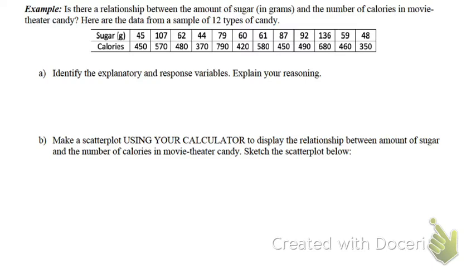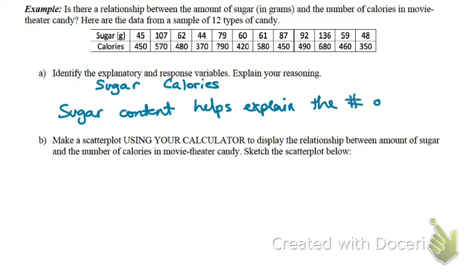Sugar grams, calories, which one is the explanatory? Which one is the response? Sugar grams. So you think the sugar grams is helping to explain the number of calories? Yeah. Absolutely. Do you guys know what three things make up how many calories something has? Sugar. So carbs, and sugar's part of the carbs. Fat and protein. Very good. Our explanatory variable is the sugar, the response variable is the calories, and this is because the sugar content helps explain the number of calories.